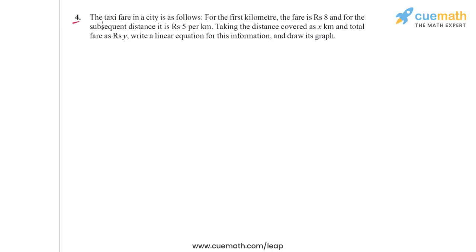In question 4, the problem statement says that the taxi fare in a city is as follows: for the first kilometer, the fare is rupees 8, and for the subsequent distance, it is rupees 5 per kilometer. Taking the distance covered as x kilometers and the total fare as rupees y, write a linear equation for this information and draw its graph.